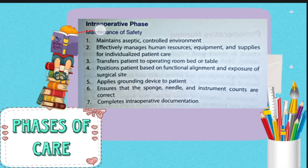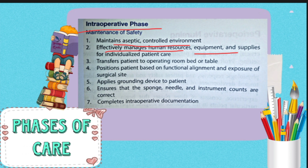In the intraoperative phase, the first thing is to ensure the operation theater is clean. Previously used equipment should not be reused, and human resources — the staff — should be used wisely without making the operation theater crowded. The patient is taken from the ward to the operation theater and positioned so that the surgical site is exposed. For example, if surgery is performed on the chest or abdomen, the patient should be lying in the supine position so the operation site is accessible.